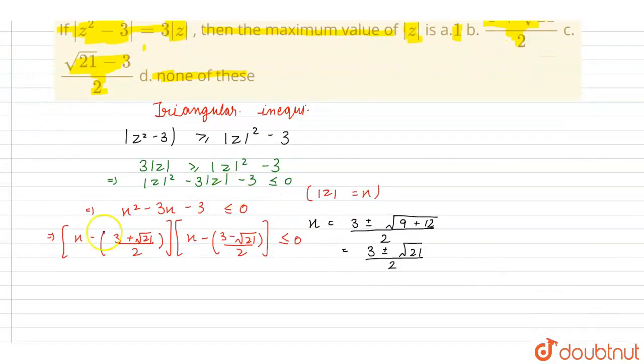Now, this inequality can be solved as x less than or equal to 3 plus under root of 21 upon 2. But since x equals mod z, therefore x cannot be negative, therefore it will always be greater than or equal to 0.